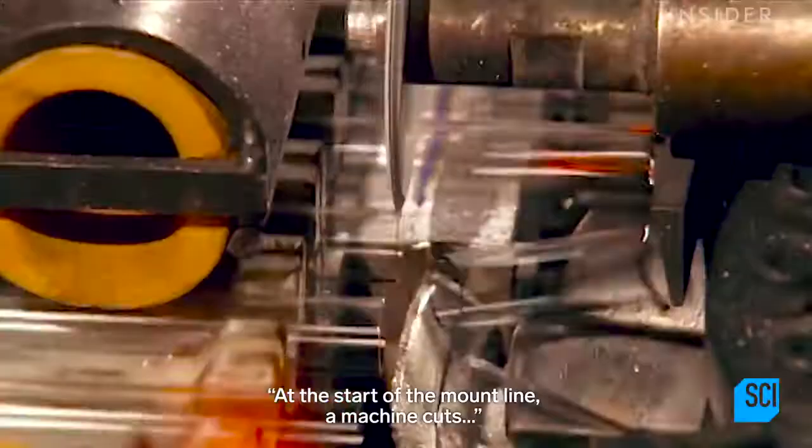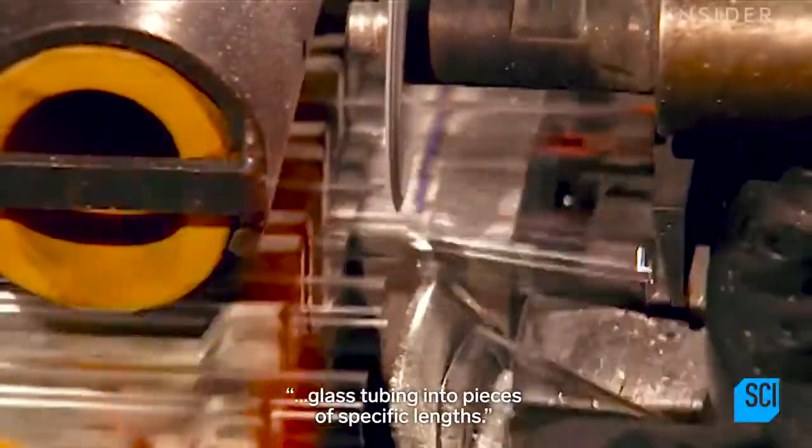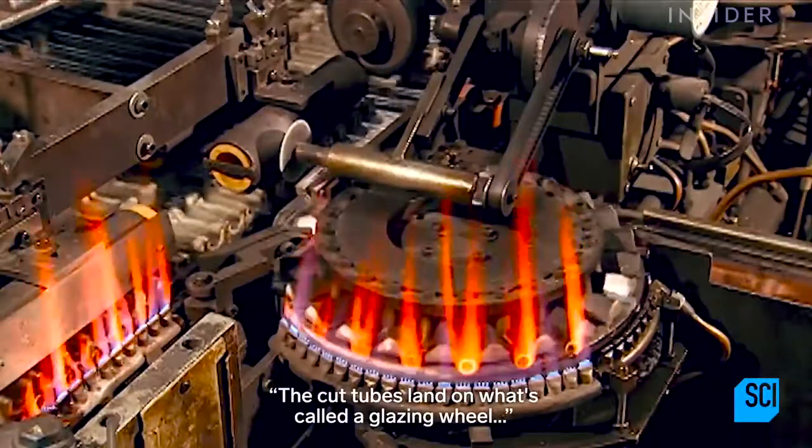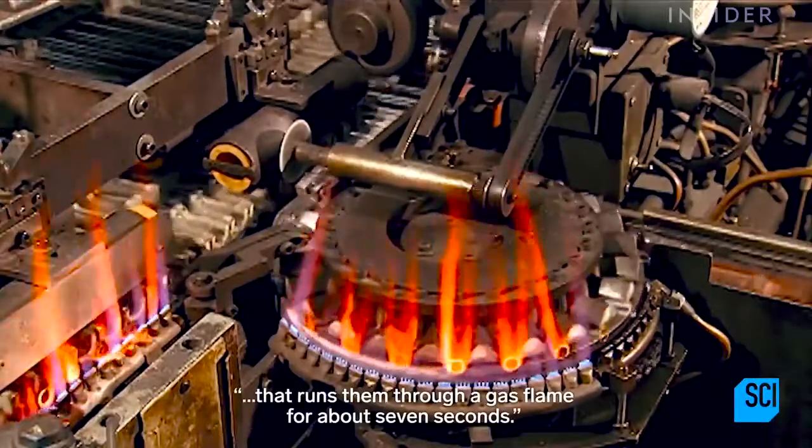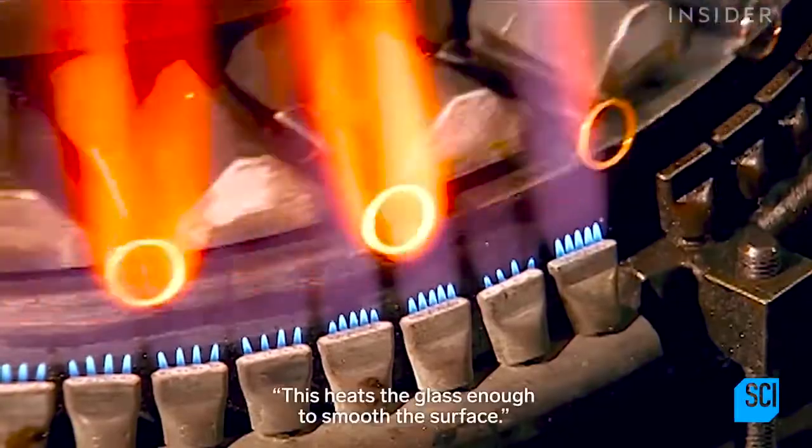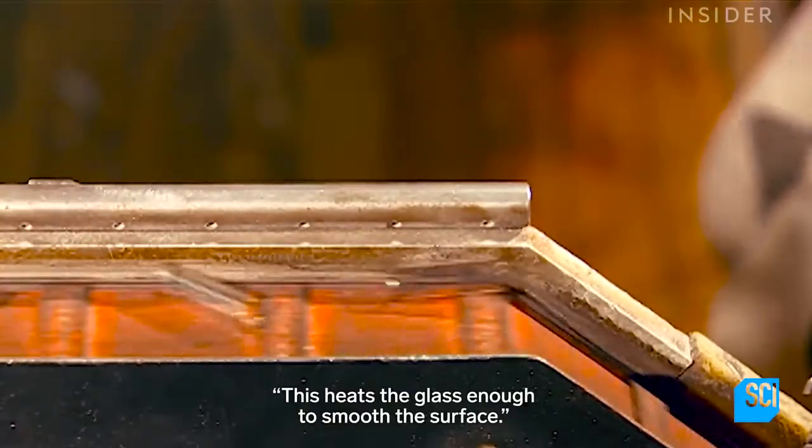At the start of the mount line, a machine cuts glass tubing into pieces of specific lengths. The cut tubes land on what's called a glazing wheel that runs them through a gas flame for about seven seconds. This heats the glass enough to smooth the surface.